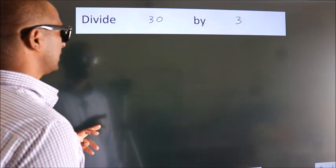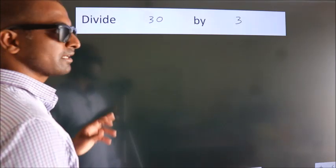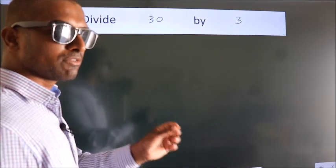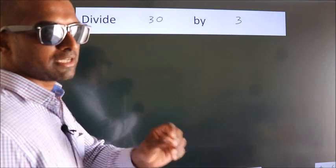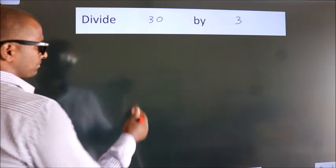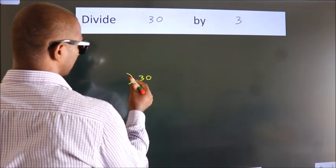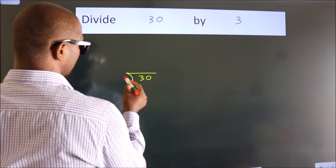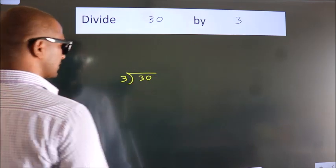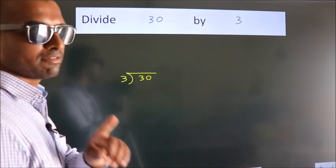Divide 30 by 3. To do this division, we should frame it in this way: 30 here, 3 here. This is your step 1.